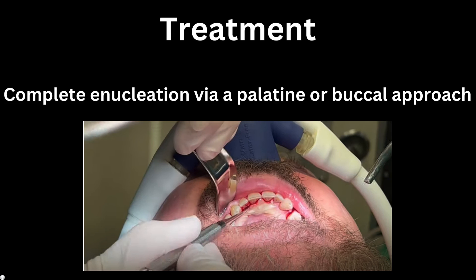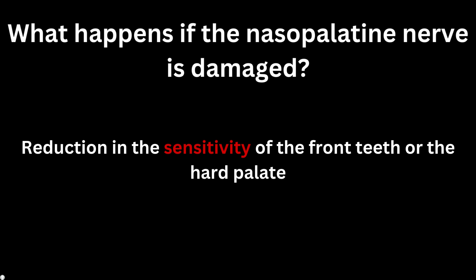Should we remove the nasopalatine duct cyst? Yes, of course — removal is necessary because if left untreated it will keep growing in size and will affect the vital structures on the palate. Removal is mandatory and can be done via a palatine or buccal approach: either you come from the buccal side and raise a flap, or you come from the palate and raise a flap. Both approaches are acceptable for the removal of the nasopalatine duct cyst.